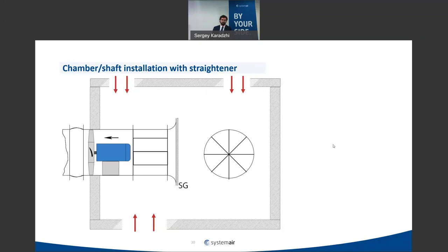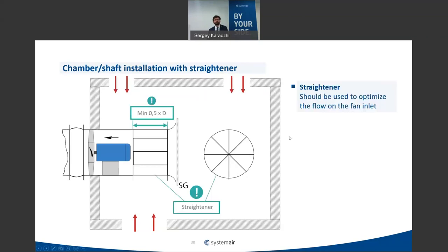If you have a chamber with air coming from different directions, it's always better to use a flow straightener, because non-uniform velocity profiles at the fan inlet influence its performance. In test rigs, a straightener is always placed after the damper to prevent any flow twist in front of the fan.